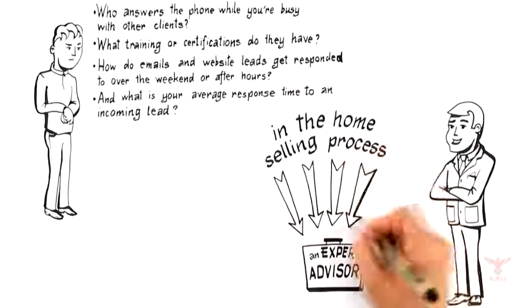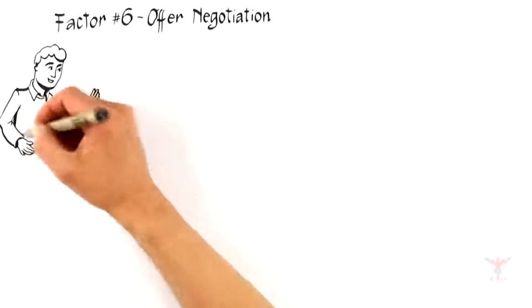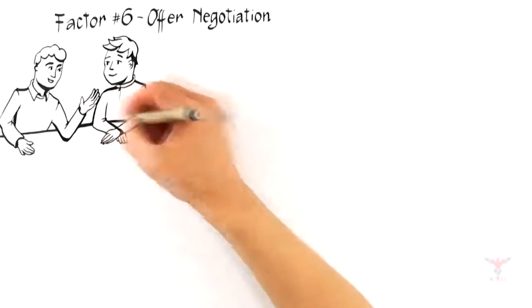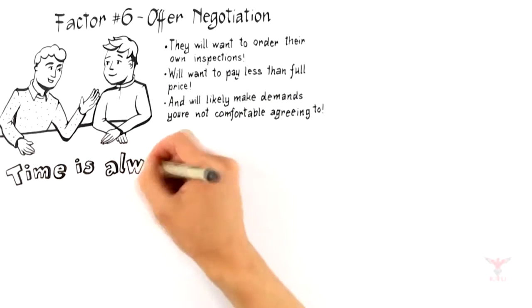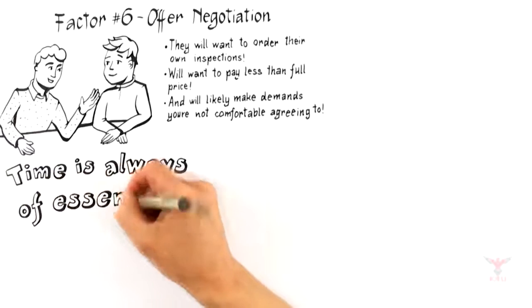Alright, the next-to-last factor that influences the likelihood you get top dollar for your home is factor number six: offer negotiation. Regardless of how well a home is positioned to attract the perfect buyer, they will want to order their own inspections, will want to pay less than full price, and will likely make demands you're not comfortable agreeing to. Therefore, not enough can be said about hiring an expert who can negotiate an outcome that serves your best interests.